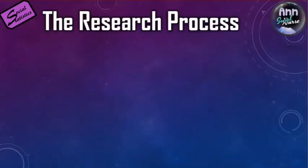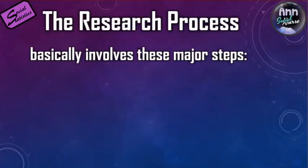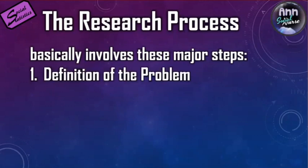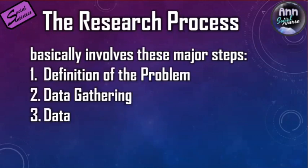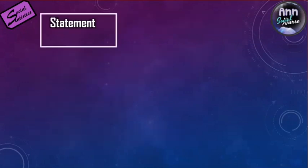The research process basically involves these major steps: definition of the problem, data gathering, data analysis, and verification of the results. Different authors and different books would feature the research process in detail like this.